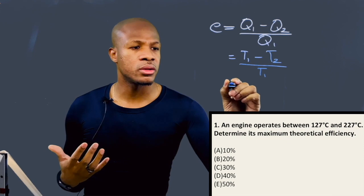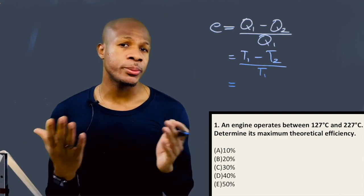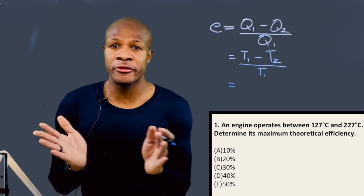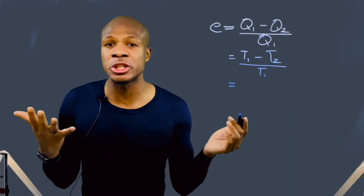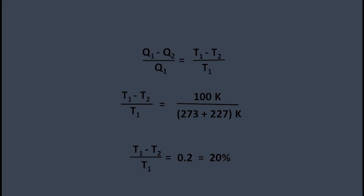Now we take the difference between the temperatures, which is 100 degrees. The difference between temperatures is the same in Celsius or Kelvin scale because it's a difference — the difference between 127 and 227 is 100 Kelvin. And then I'm going to divide that by T1, but I'm going to convert T1 into Kelvin. To convert Celsius to Kelvin, you just add 273. So that would be 273 plus 227, which equals 500 Kelvin. That gives us 100 over 500, which equals 0.2. Convert that to a percentage — multiply by 100 — and that gives us 20%. And that's how you do this problem.